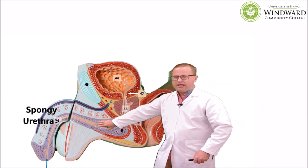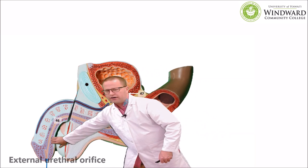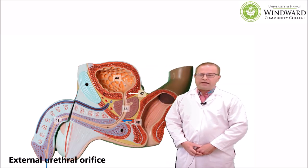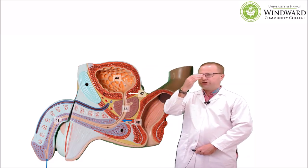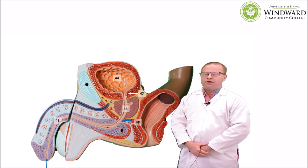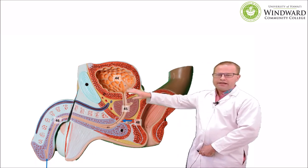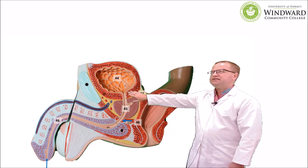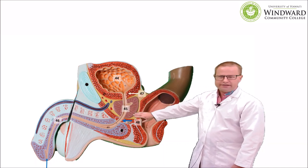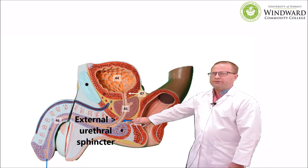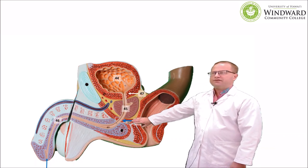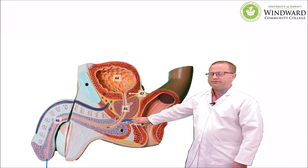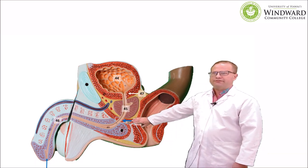Past that we have the penile urethra or spongy urethra, which is rather long in men and ends at the external urethral orifice. The structures that control urination are our sphincters — we have two. The internal urethral sphincter is located around the neck of the urinary bladder and is smooth muscle and involuntary. The external urethral sphincter is located further down, is skeletal muscle, and is voluntary — giving all humans above about age three or four the ability to control their micturation reflex.